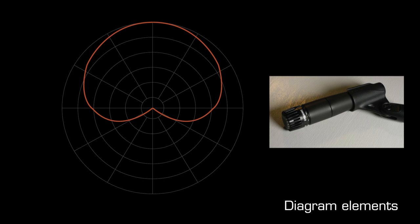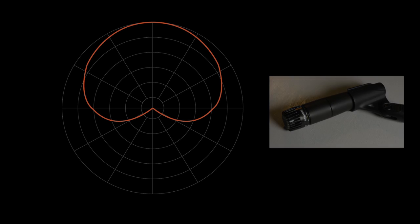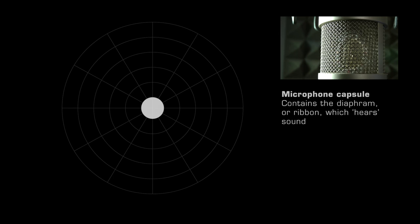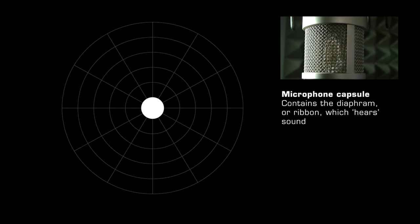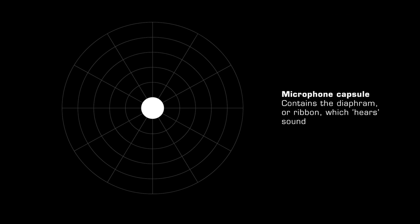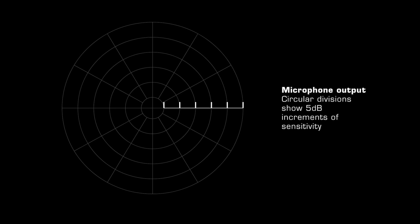The polar pattern diagram takes the form of a two-dimensional contour map showing the microphone's output at different angles of incident of a sound wave. The center of the diagram represents the microphone's capsule. This point is surrounded by a series of concentric circles which function as a scale with which to plot the output of the microphone. This scale is variable but typically shows five decibel increments.